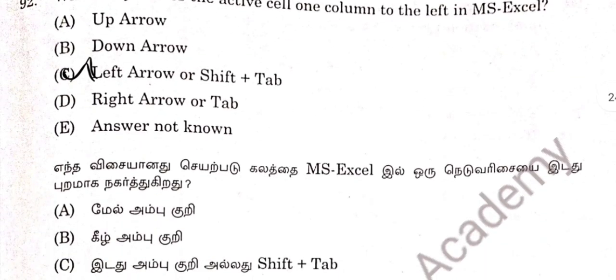Question 92: This is an Excel-based question. Which key moves the active cell one column to the left in MS Excel? Option D — left arrow or Shift plus Tab. Option C.